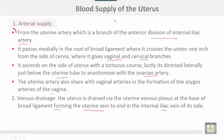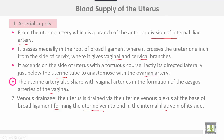The blood supply of the uterus — arterial — comes from the uterine artery, which is a branch of the anterior division of the internal iliac. It passes medially in the root of the broad ligament, where it crosses the ureter one inch from the side of the cervix, giving vaginal and cervical branches. It then ascends on the side of the uterus with a tortuous course, directed laterally just below the uterine tube to anastomose with the ovarian artery. The uterine artery also shares with the vaginal arteries in the formation of the azygos arteries of the vagina.